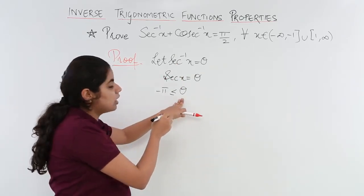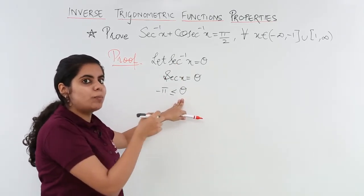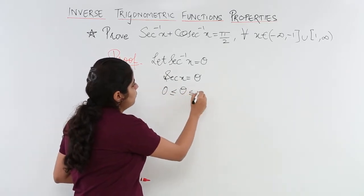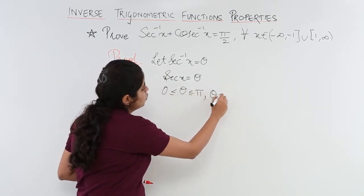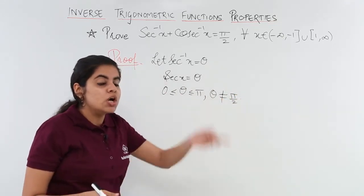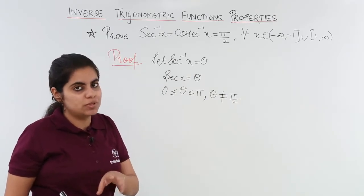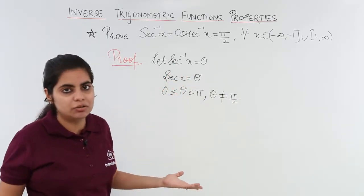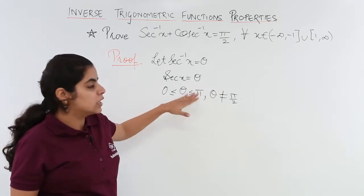So θ lies in between what range? θ is actually a member of 0 to π range. So my θ lies in 0 to π and θ should never be equal to π/2. Why? Because I know that cos(π/2) is 0 and 1 upon cos is sec. 1 upon 0 is not defined.